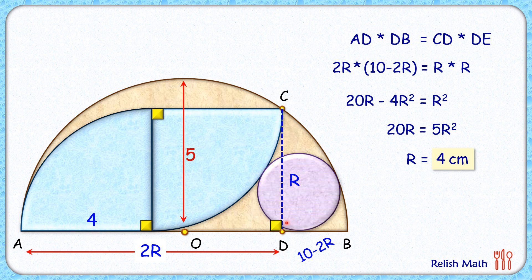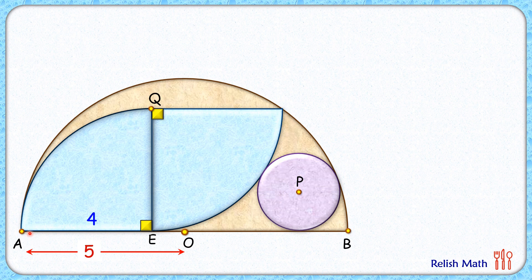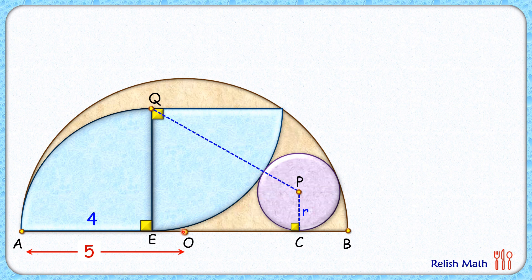Now let's bring back our circle whose radius we have to find and return to the original figure. Now that we have the radius of the quadrant as 4 centimeters, let's find the radius of this circle. When circles are touching each other, their centers and the point of contact lie in a straight line. The purple and brown circles are touching, so their centers O, P and the point of contact lie in a straight line.